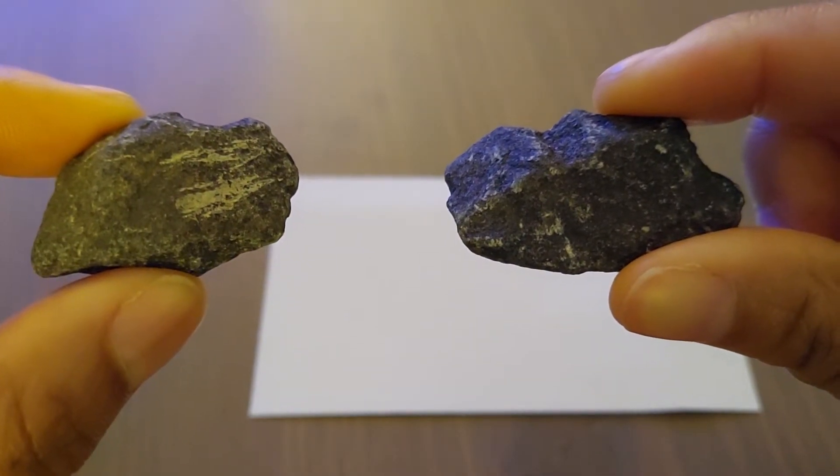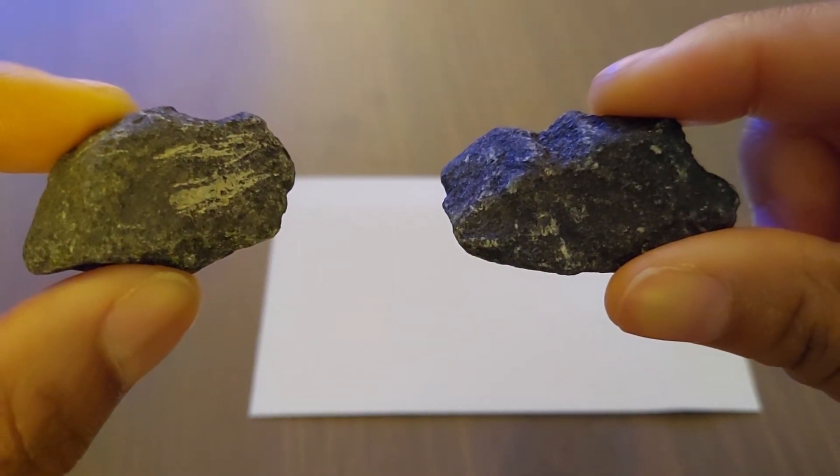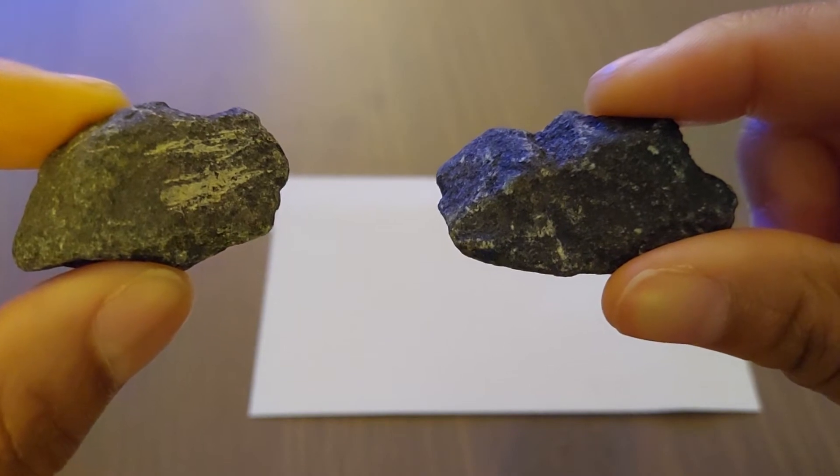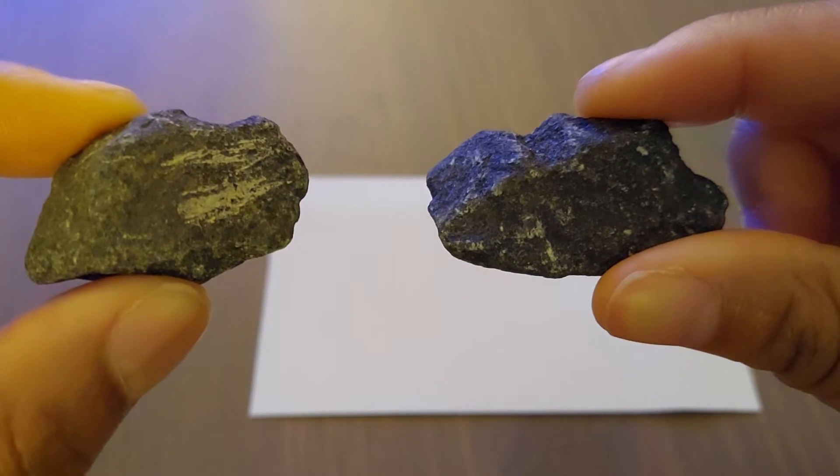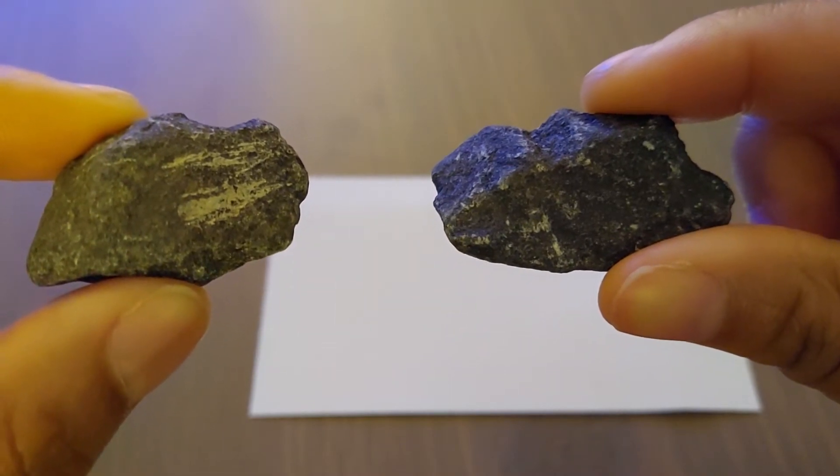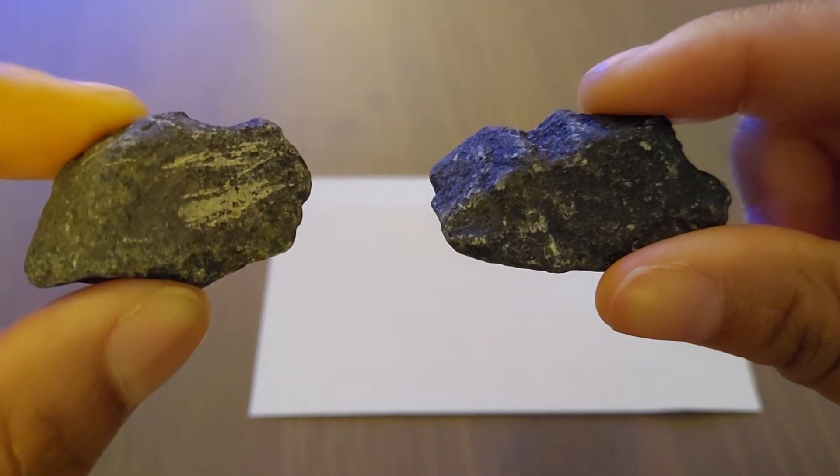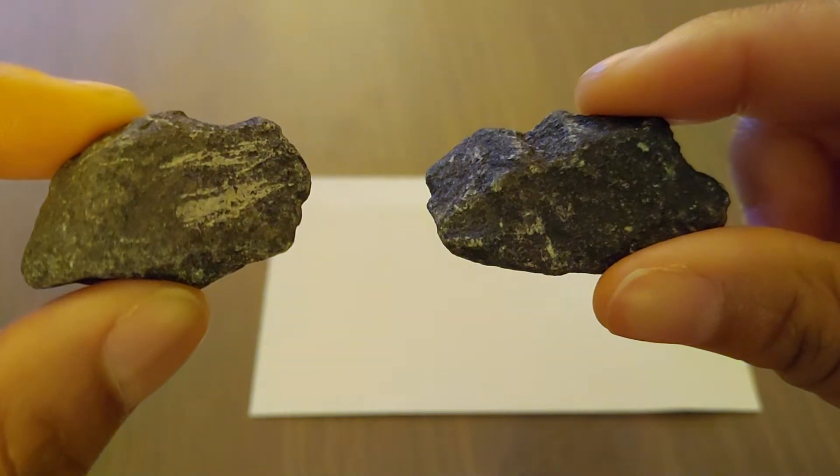So you can pause the video and take a look at the rocks and describe them by their property words. Remember to write it down. Once you're done writing down the property words for these rocks, we are now going to take a look at what happens when we rub these two rocks together.